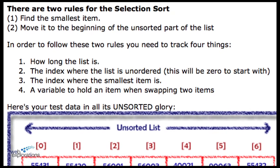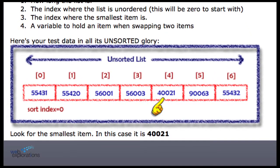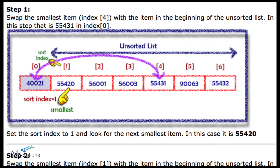Here's our test data that we've been working on — all six items. We're going to look for the smallest item. As we go down we compare: which is smaller, 3-1 or 2-0? 2-0. Which is smaller, 2-0 or 0-1? 2-0. Which is smaller, 2-0 or 0-3? 2-0. Which is smaller, 5-5-4-2-0 or 4-2-1? Comparing the others, we can see this is our smallest one. So we're going to take position index 4 and swap it with index 0.